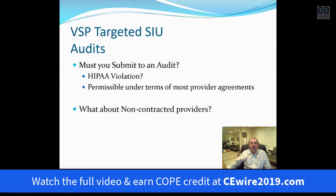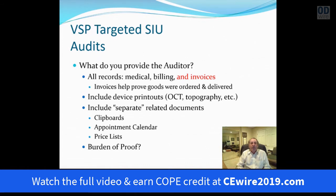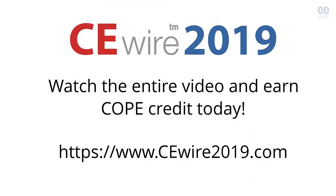Once the auditor arrives and you're satisfied they are a VSP auditor, you'll obviously provide what they ask for — but you may want to give them more than expressly requested to make sure things are complete. I've seen many audits where the doctor had records that would have answered the auditor's question, but the auditor didn't know to ask and the doctor didn't volunteer them. For example, VSP audits for evidence of dispensing of glasses or contact lenses — a record showing the actual dispense date. Some offices keep that separately from the main record.